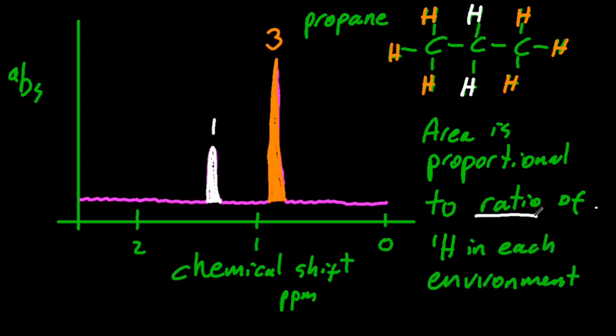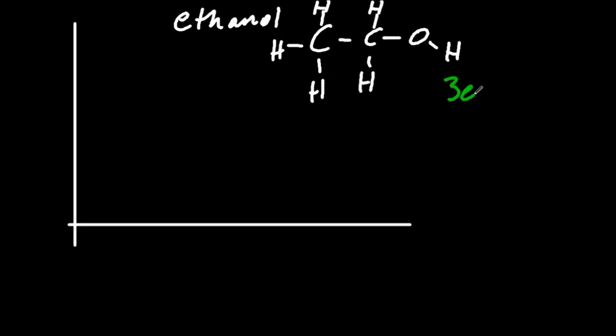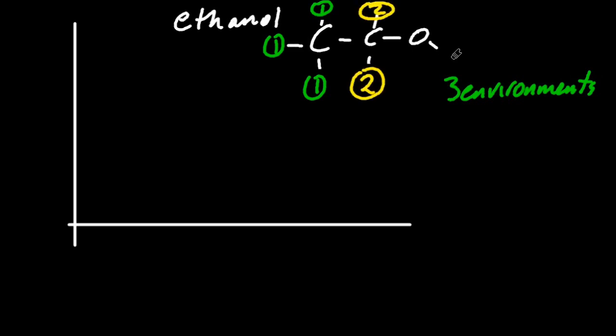So for our third example, let's look at ethanol. If I draw the molecule out, in this case there are three different hydrogen environments. So I'm expecting three peaks on my H1 NMR. Let's look at these three environments. The three hydrogens on the left are identical in an identical place. Those two in the middle are also identical to each other. And finally, the one at the end next to the oxygen, that's a different hydrogen again. So three different hydrogen environments and the ratio of the areas should be three to two to one.